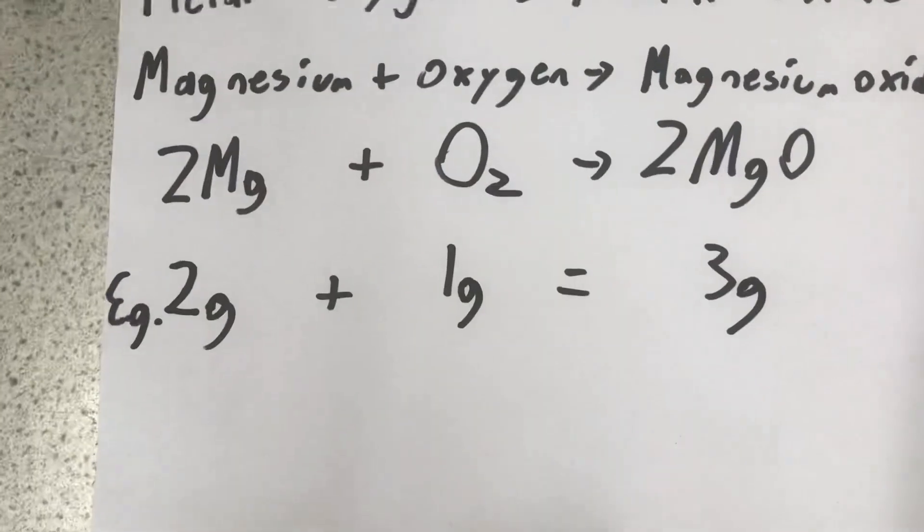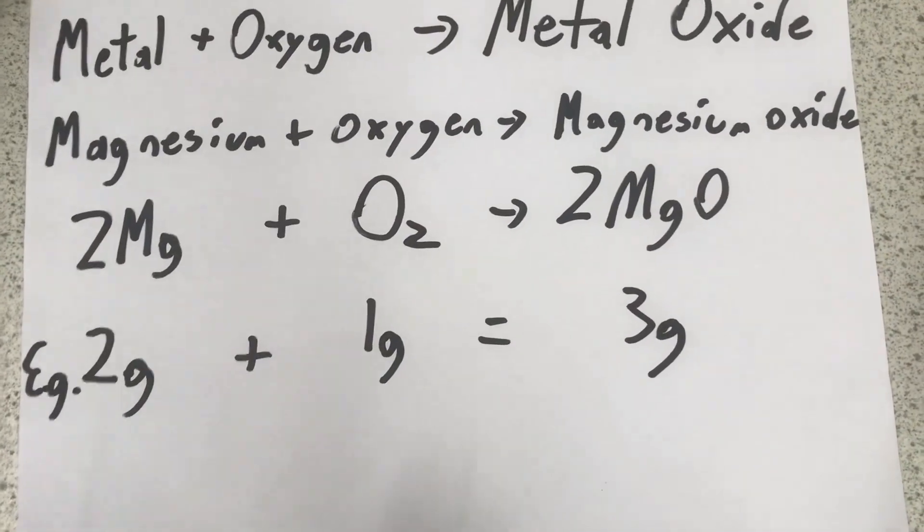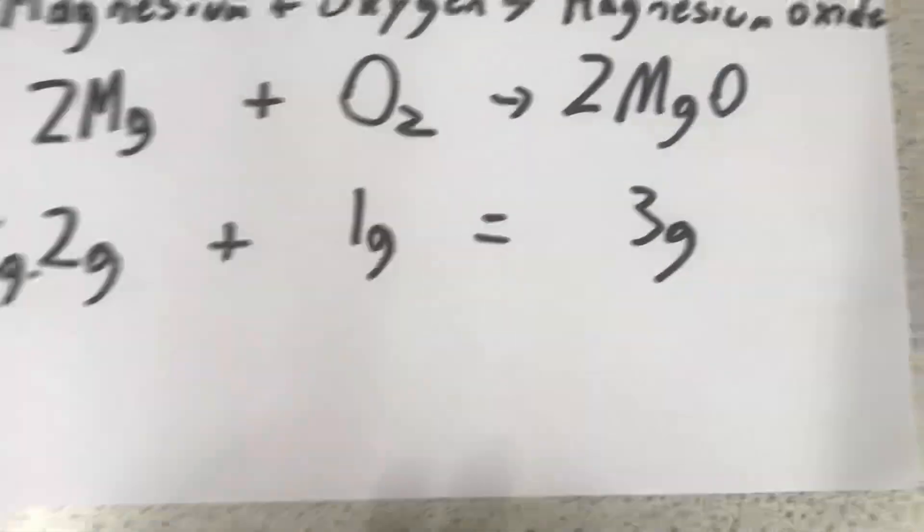Now, this time, I will be putting it over a Bunsen burner to add oxygen from the air to create magnesium oxide.